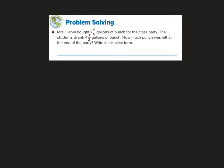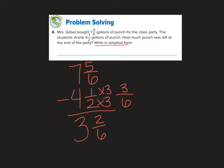Okay, Mrs. Gabble bought 7 and 5 sixths gallons of punch for the class party. The students drank, it's going away, right? 4 and 1 half gallons of punch. How much punch was left at the end of the party? Write it in simplest form. Okay, first step, get common denominators. So I'm going to have 3 sixths. 5 sixths minus 3 sixths is 2 sixths. 7 minus 4 is 3. Simplify equals 3 and 1 third gallons.